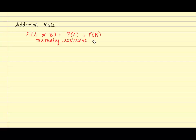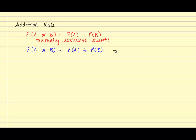Recall that two events are considered mutually exclusive if they do not have any simple events in common. The second formula, which is again the probability of A or B, is equal to the probability of A plus the probability of B minus the probability of A and B. This formula is used for non-mutually exclusive events.